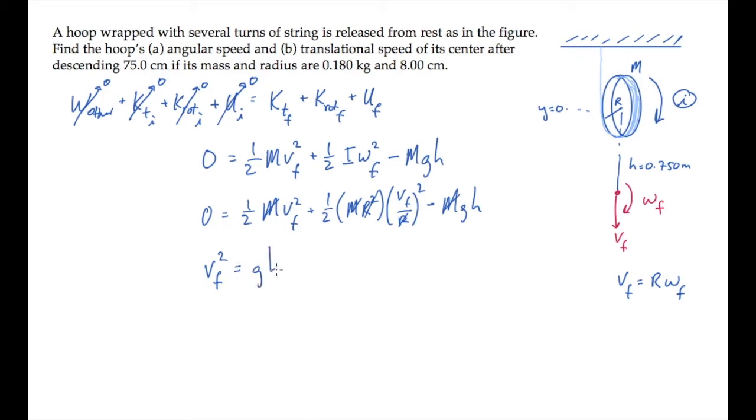We can solve part b then, by taking the square root, substituting values, and calculating. Finding that the hoop's center is moving at 2.71 meters per second, after it's fallen through a height of 0.75 meters.